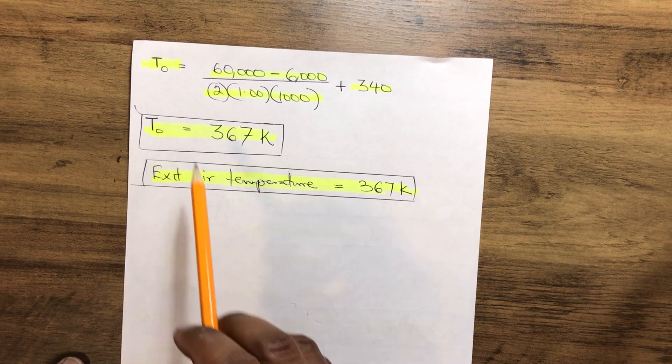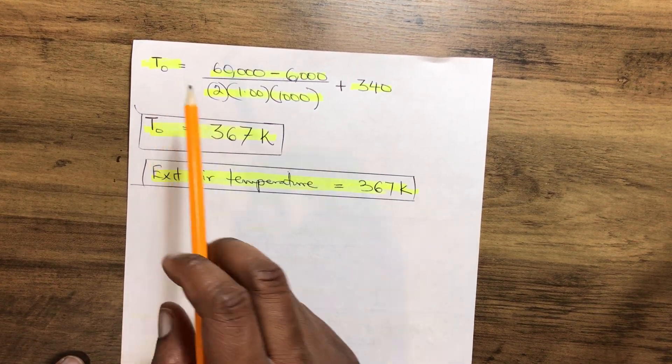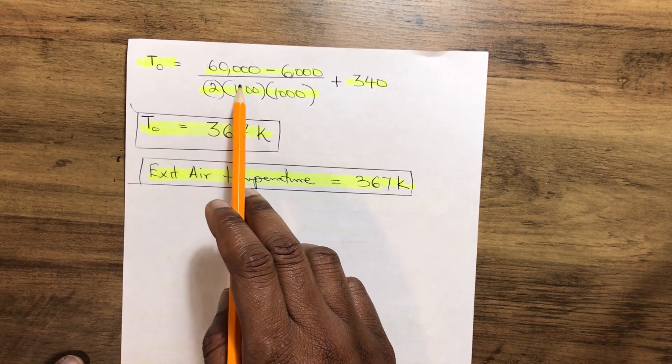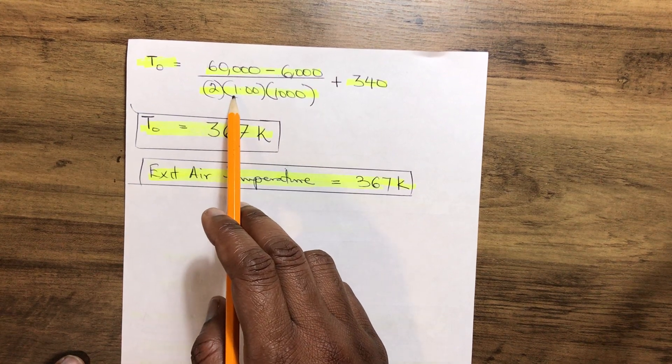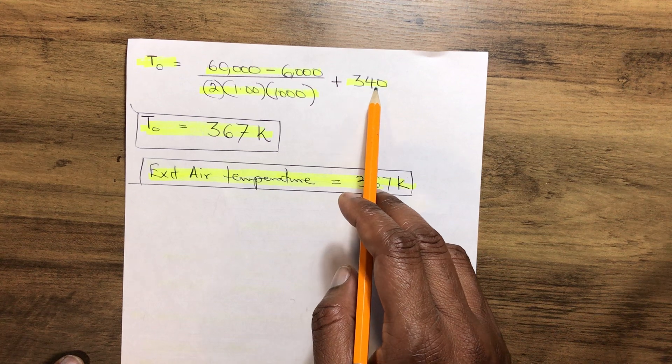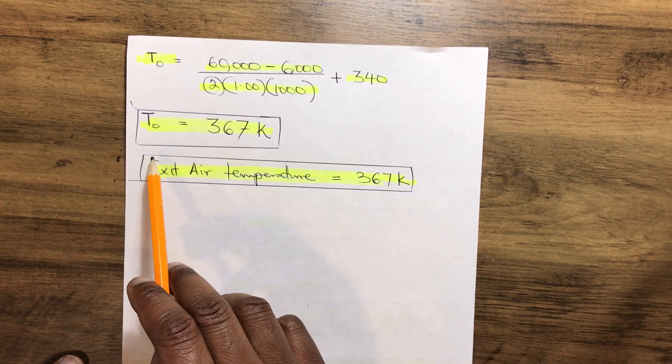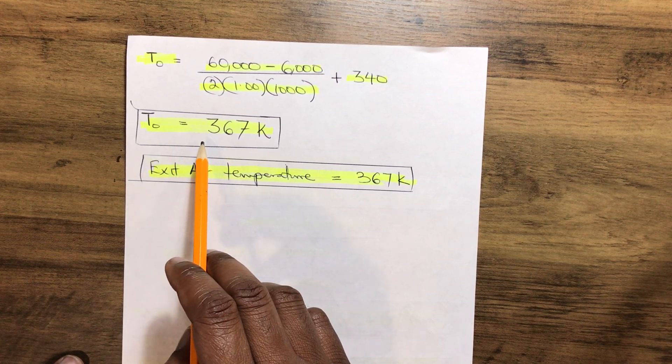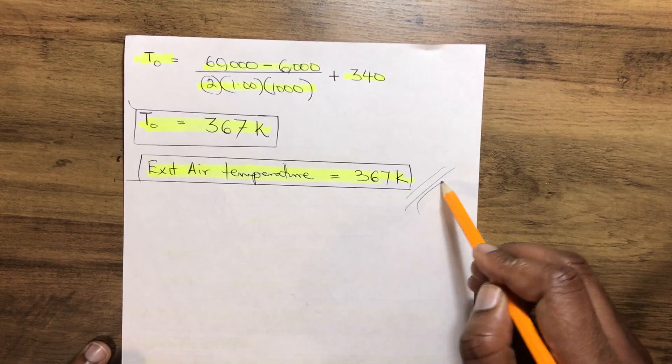Now our T, which is the temperature of the outside air coming out of the compressor, equals 60,000 minus 6,000 over 2 multiplied by 1.00 multiplied by 1,000 plus 340, which is the initial temperature. So therefore our calculated exit air temperature coming out of the compressor equals 367 kelvin. Thank you.